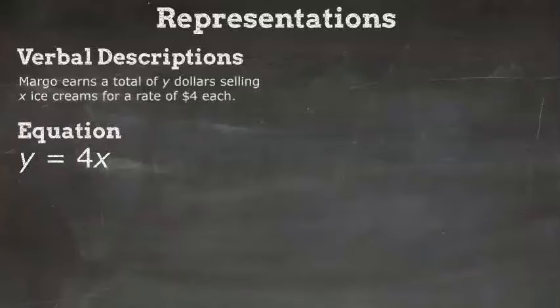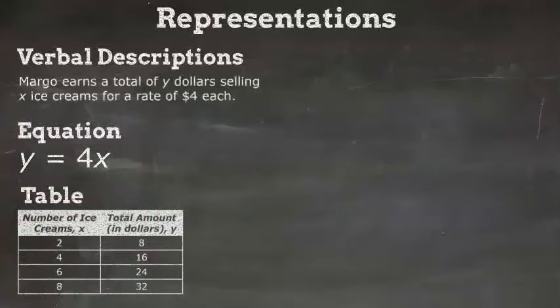When we make a table, we want to list possible values. So for every x we list, we want to multiply by 4 to get the y. If she sold two ice creams, she would make $8. Four ice creams gets her $16. Six ice creams get her $24. And eight ice creams get her $32.